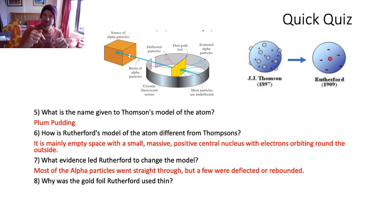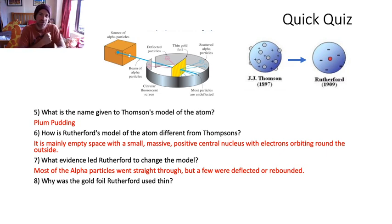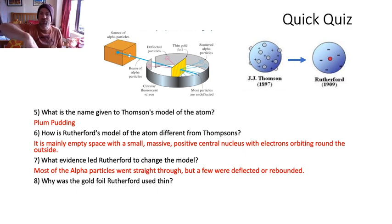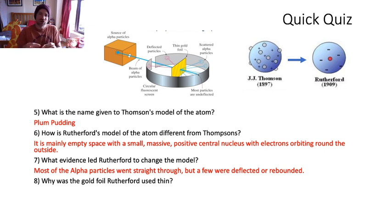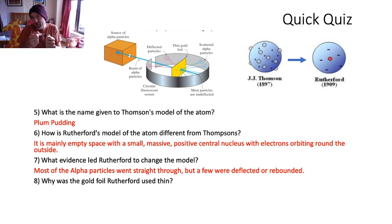How is Rutherford's model different? Rutherford's model was mainly empty space. Thompson's plum pudding was a positive ball of charge with negative electrons dotted in it. Rutherford found out it was mainly empty space with just a small, really heavy, positive nucleus in the middle, and the electrons going around the outside. It shifted from a positive sphere of charge to basically empty space with a little nucleus and electrons around the outside.